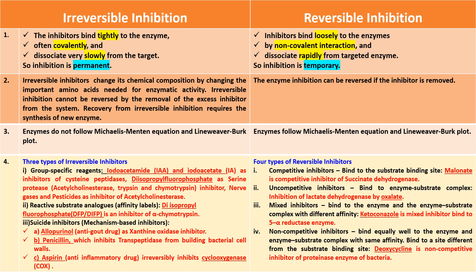Non-competitive inhibitors are like mixed inhibitors in that they bind with both the enzyme and the enzyme-substrate complex, but the affinity is the same for both. They also bind to a site different from the substrate binding site. An example is doxycycline, which is a non-competitive inhibitor of proteinase enzymes of bacteria.